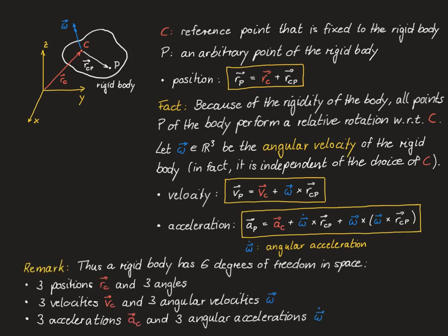As a final remark, a rigid body has six degrees of freedom for its movement in space: the three positions of a reference point plus three angles describing its orientation, corresponding to three velocities vc and three angular velocities described by omega, and three accelerations ac.